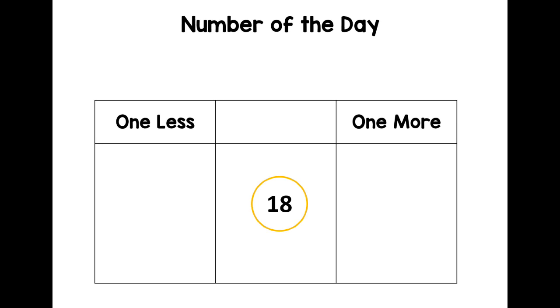One less - so the number you say when you're counting before you get to 18 is 17. One less is 17. What about one more? What comes after 18 when you're counting? If you have 18 cakes and then you have one more, you have 19. Well done.